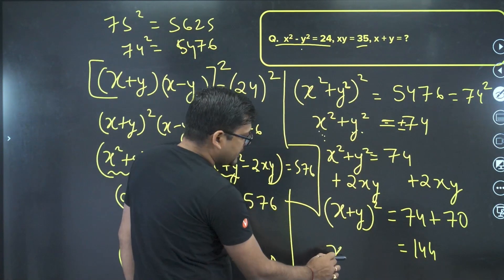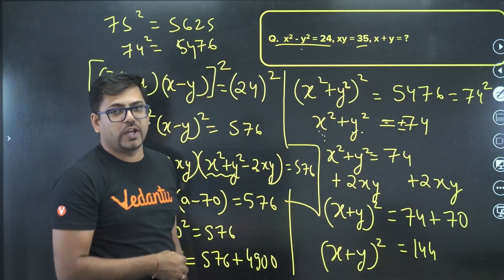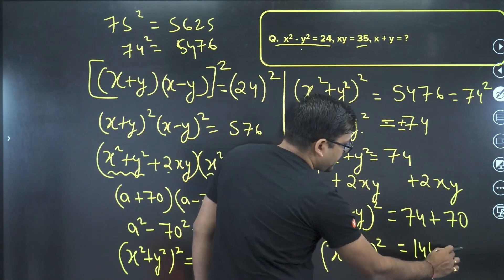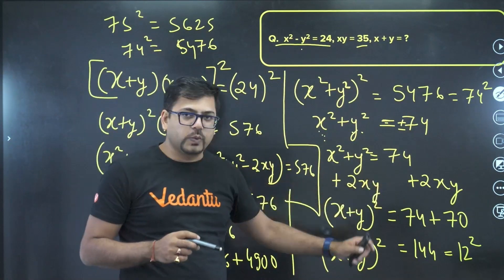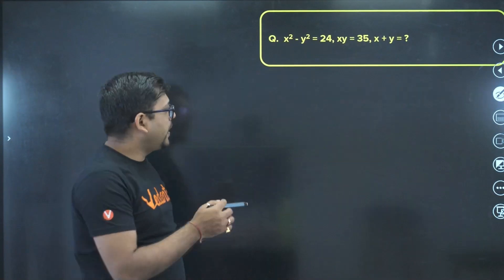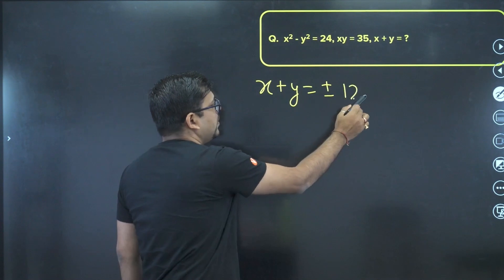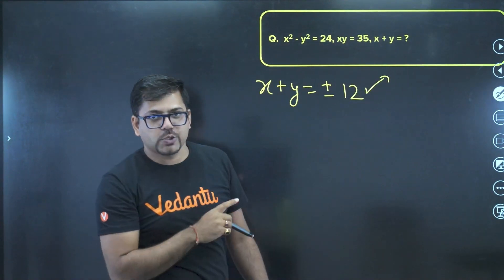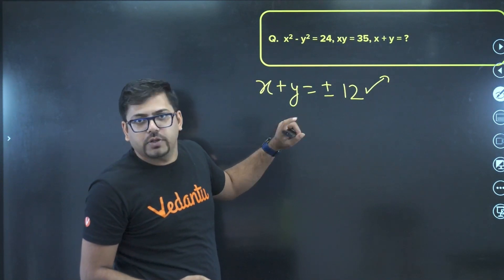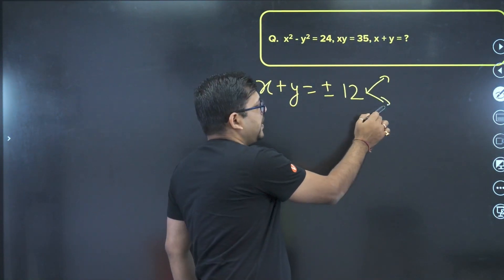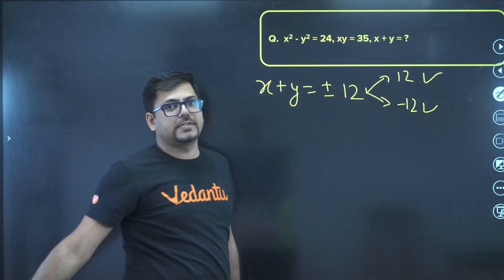So (x+y)² equals 144, which is 12². Hence x+y equals plus 12 or minus 12. We have two values because x and y can be negative or positive — no issues with that. So x+y equals ±12, and that is our final answer.